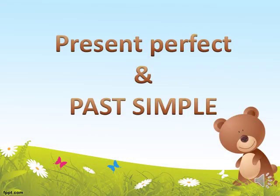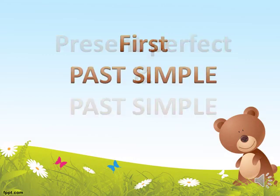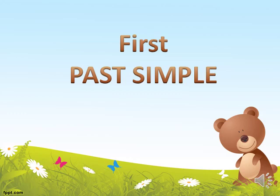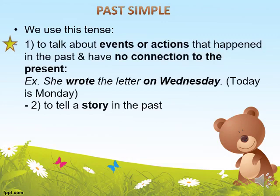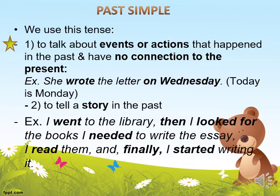Hello dear students. In this video we're going to talk about the present perfect and the past simple tense. We use the past simple tense to talk about events or actions that happened in the past and have no connection to the present time. We also use the past simple tense to tell a story in the past: I went to the library, then I looked for the books I needed to write an essay, I read them, and finally I started writing it.